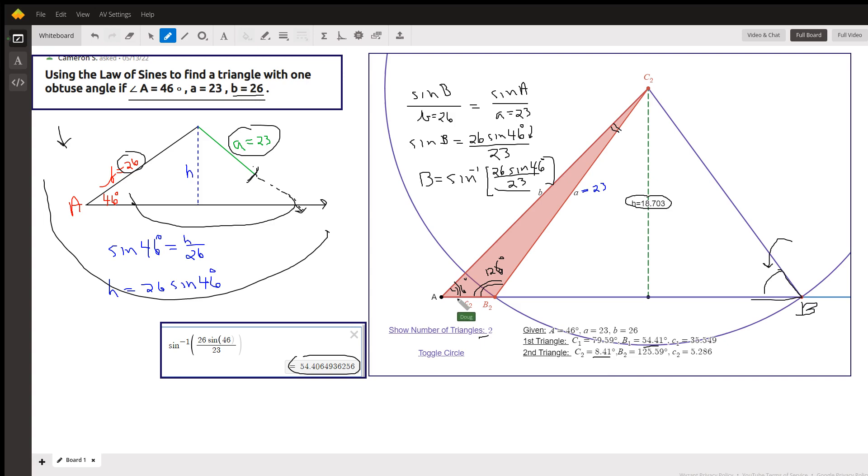So we'd say C sub 2 is to the sine of whatever big C was, 8.41 degrees.